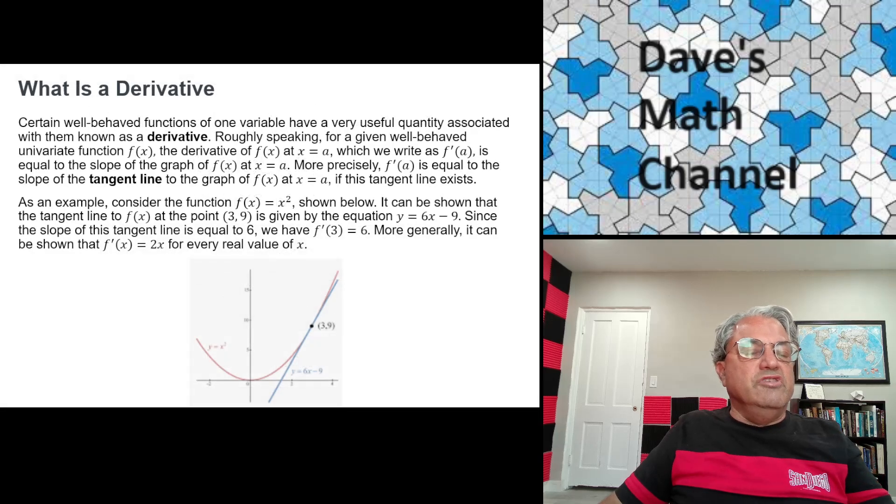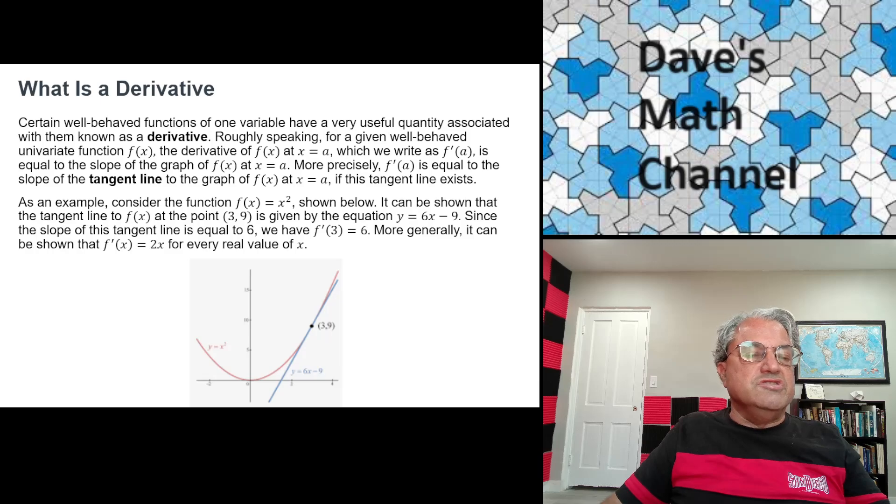So what is a derivative? First, I have to define what I mean by that. It turns out that most functions you're going to study have what are known as derivatives. Well-behaved functions have what's called a derivative. And roughly speaking, the derivative of a function at a given point is just the slope of the function at that point. So really, you can think of derivative as just slope.